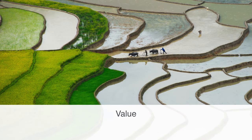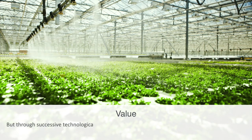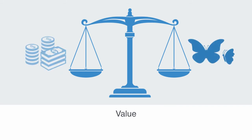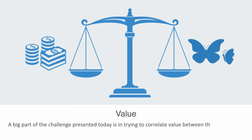Human society and economy has evolved with the natural environment over thousands of years, starting out like all other creatures subject to the same natural feedback loops and regulation within the ecosphere. But through successive technological and economic transformations, we've developed engineered environments with our own set of internal economic feedback loops and a value system that has become largely decoupled from that of the natural environment. In order for the feedback loop to work, there has to be some uniform value — we need to define some common metric of value to enable feedback to regulate the two systems in an integrated fashion.